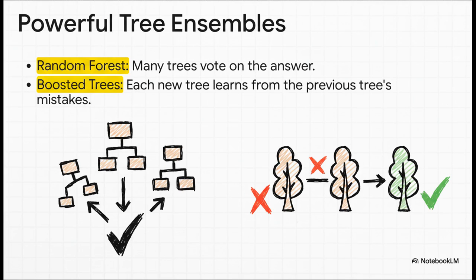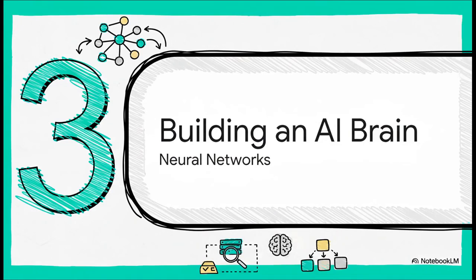But here's the thing: a single tree can be a little weak. The real magic happens when you combine a bunch of them. A random forest is like polling a room full of experts, a bunch of different trees, and just going with the majority vote. And boosted trees? They're even smarter. They build trees one after another, where each new tree's main job is to fix the mistakes the last one made. It's like teamwork for algorithms.